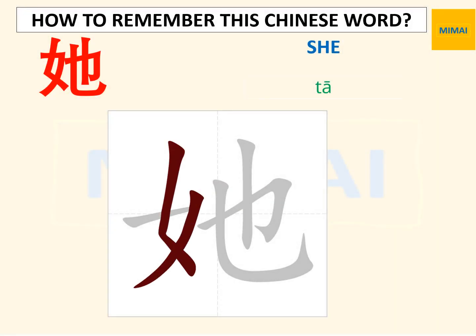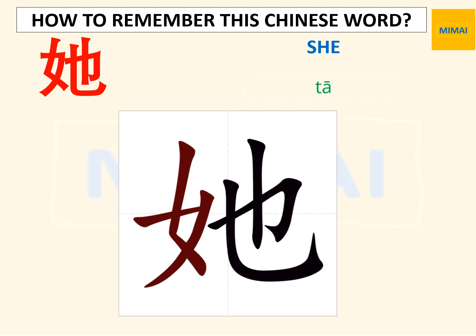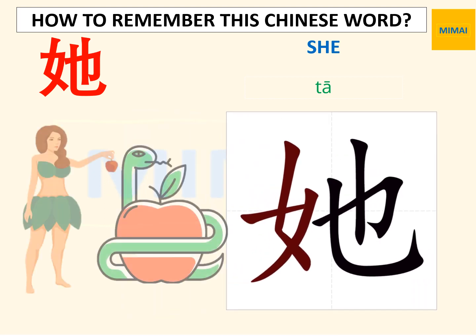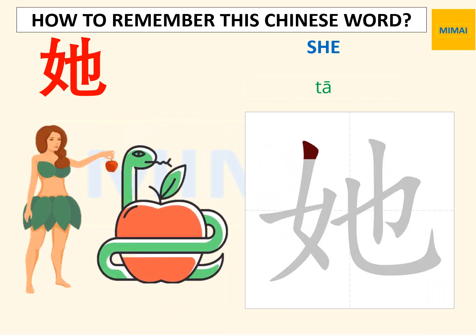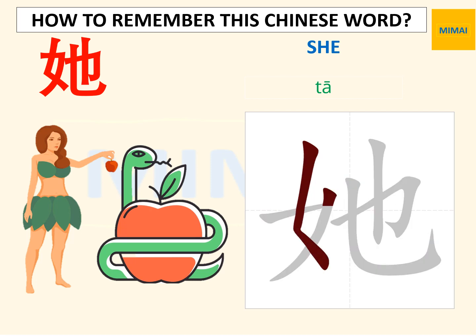Now we learn the Chinese word Xi. This word is pronounced as follow. This word is the combination of the symbol of a woman and a symbol of a snake. It reminds the first woman on earth, Xi, Eva.